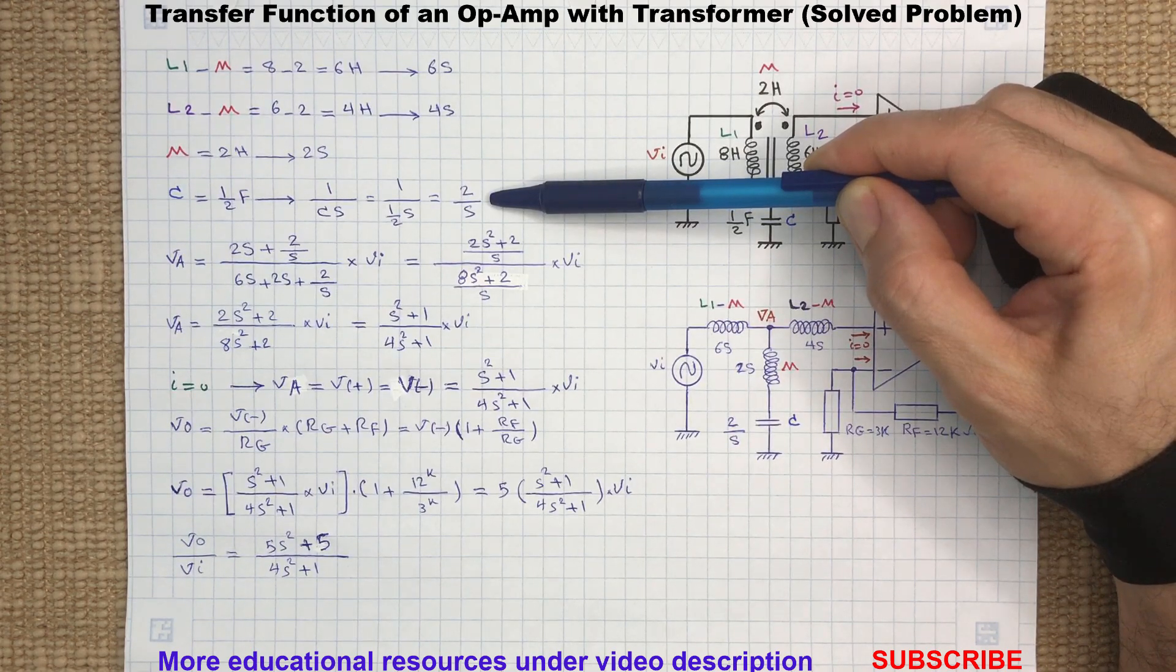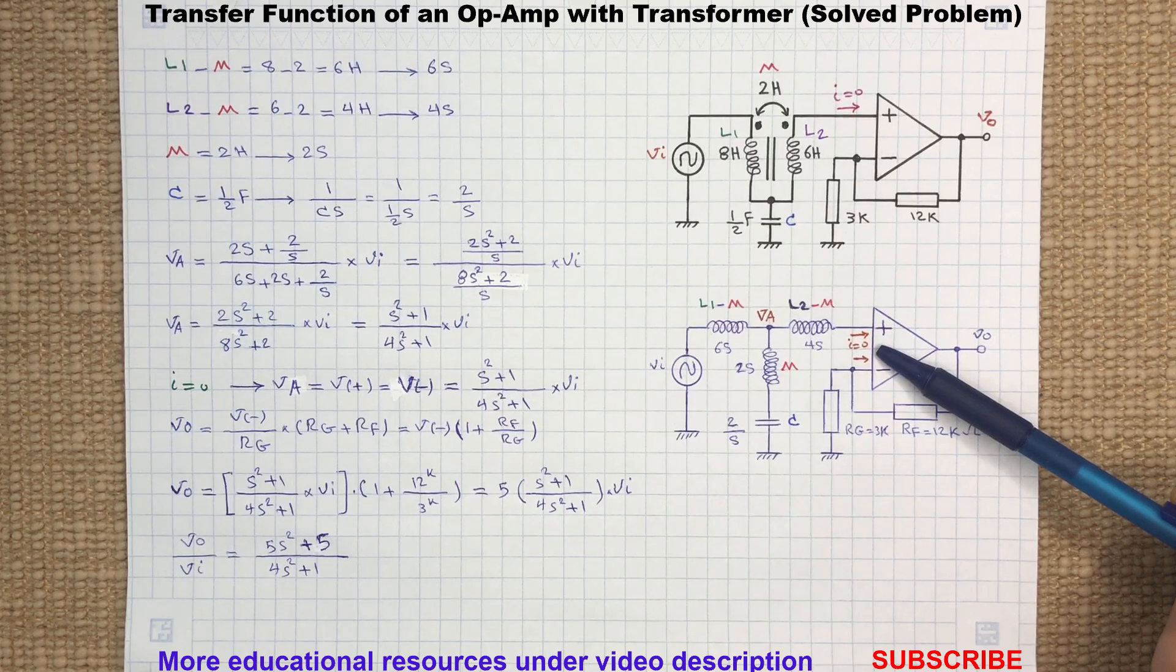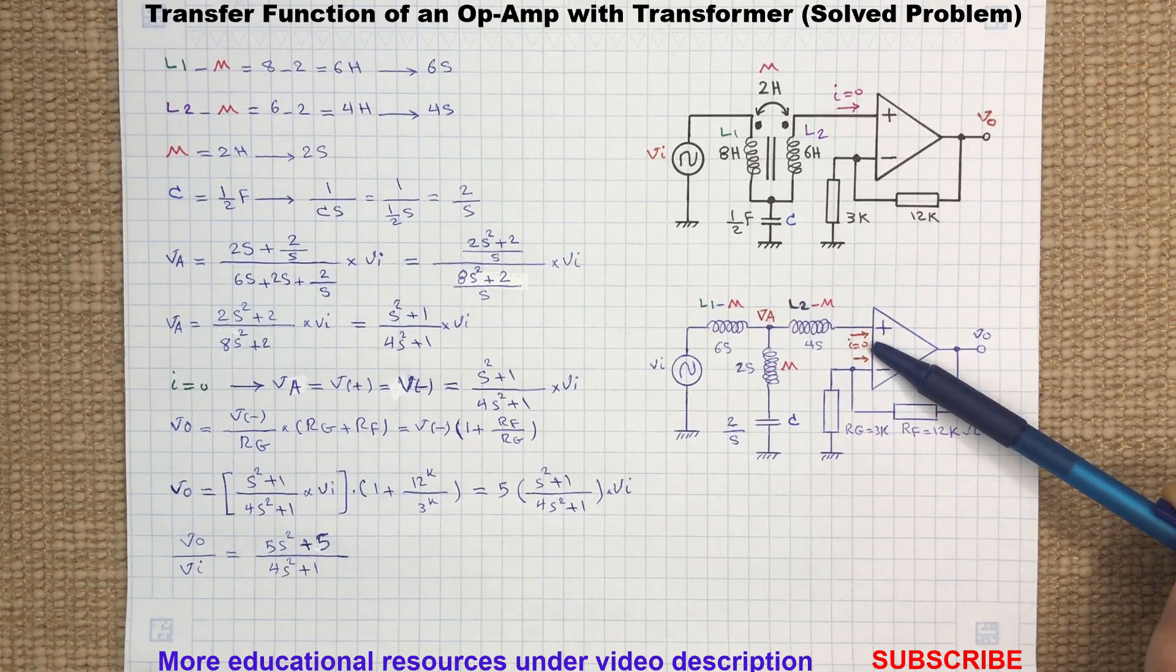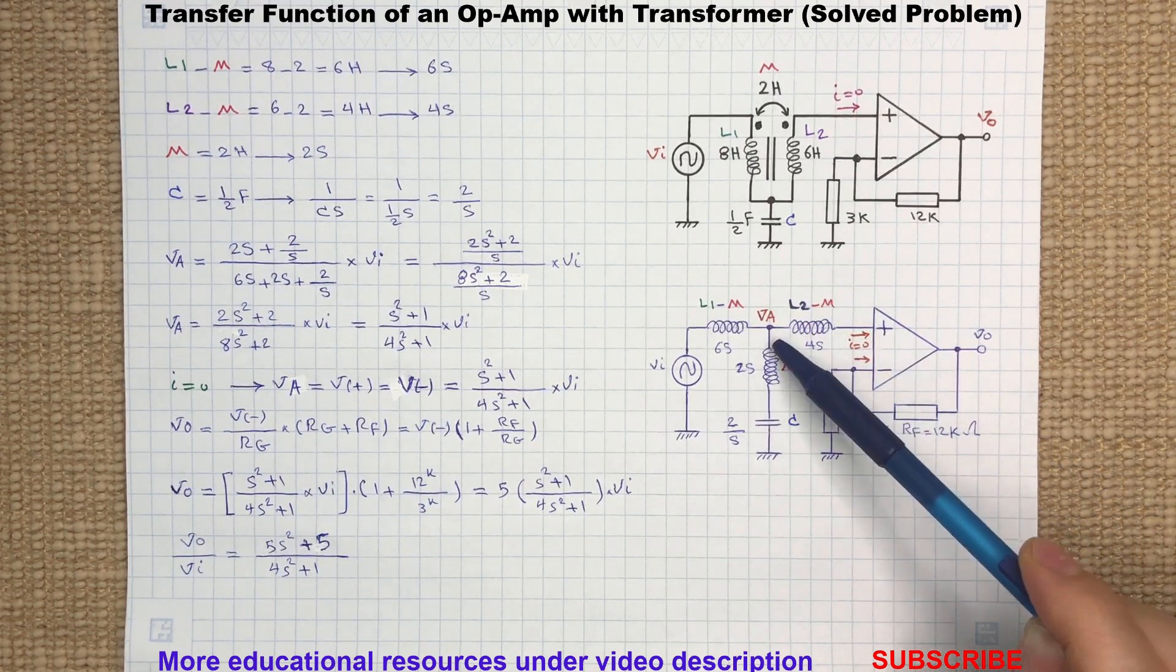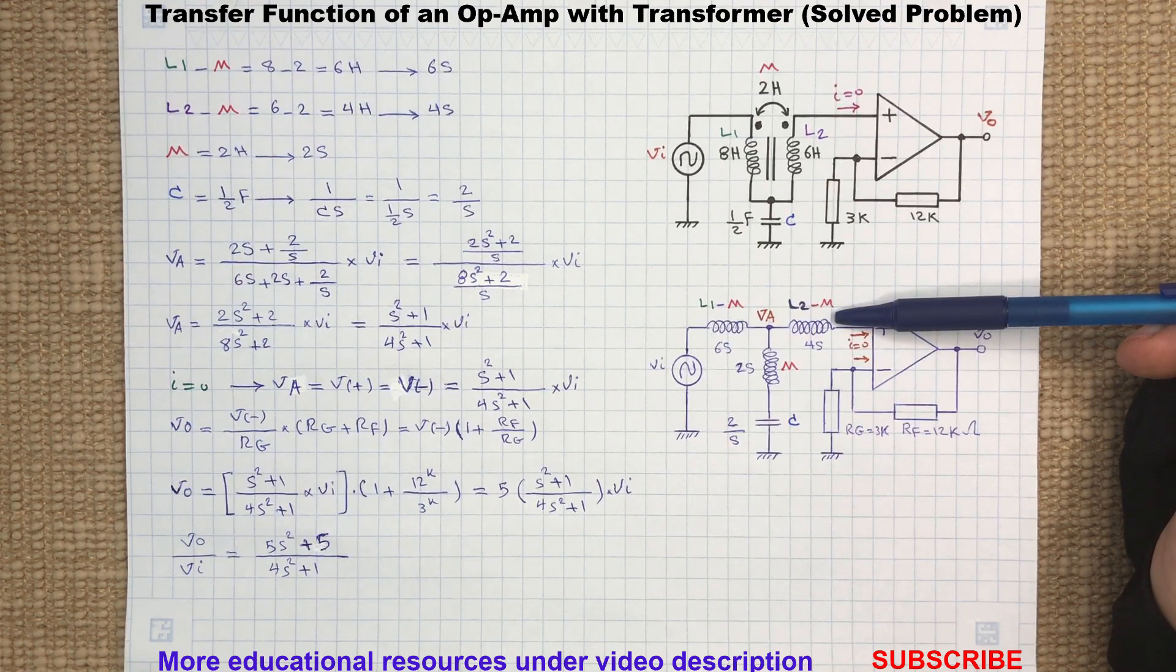As we know, the input impedance of an op-amp is very high, so we can neglect any currents flowing through the op-amp input terminals. With that, we can safely calculate the voltage at node A. By assuming no current flows through the 4s inductor here, the voltage at node A will be a simple voltage division.